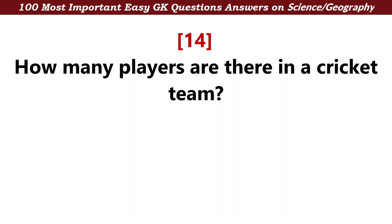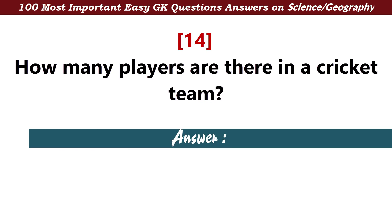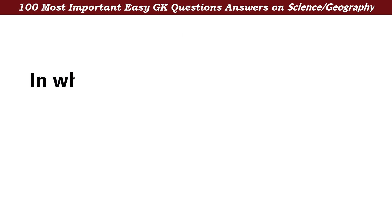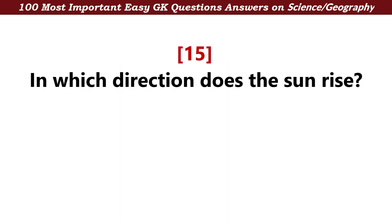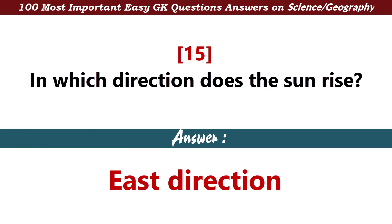How many players are there in a cricket team? Answer: 11. In which direction does the sun rise? Answer: East direction.